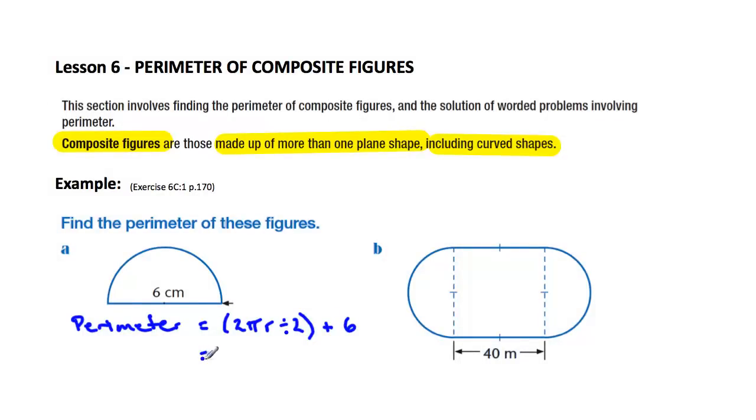So if we work this out, we've got 2πr divided by 2. Now the 2 divided by 2 will cancel out, so we're left with π times the radius. So we've got to take half of 6, which will make it 3. And then all of that needs to be multiplied together, add 6 to it, and we get our solution. So our approximate solution for this is 15.4, because it's a rounded answer, 15.4 centimeters total to one decimal place.